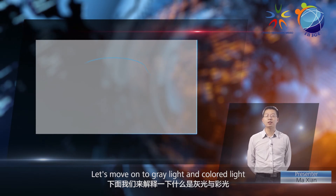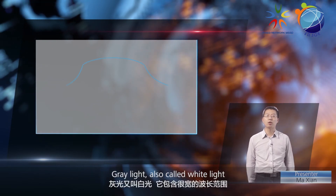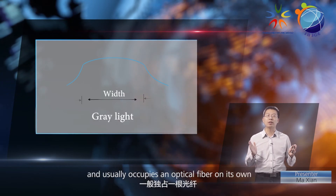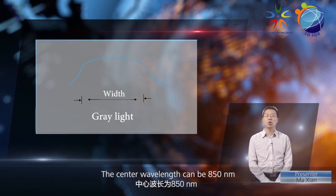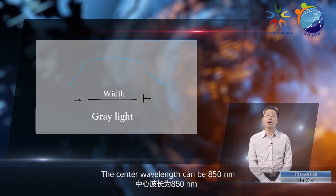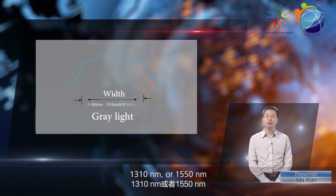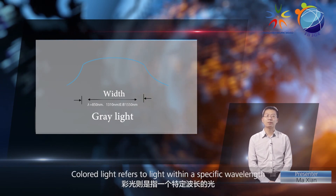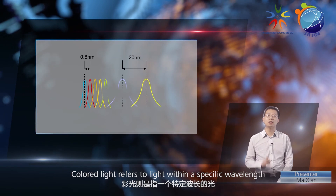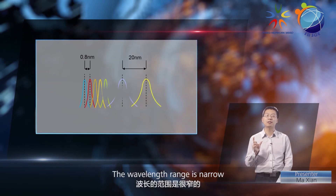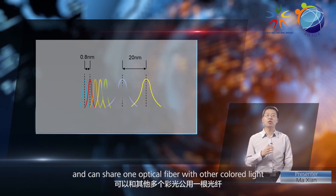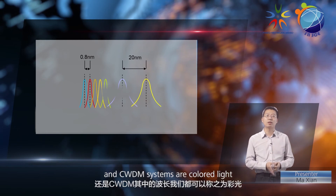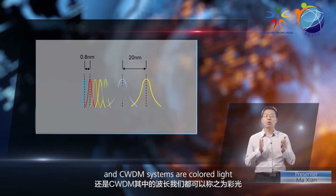Let's move on to gray light and colored light. Gray light, also called white light, has a broad wavelength range and usually occupies an optical fiber on its own. The center wavelength can be 850 nanometers, 1,310 nanometers, or 1,550 nanometers. Colored light refers to light within a specific wavelength. The wavelength range is narrow and can share one optical fiber with other colored light. The wavelengths used in both DWDM and CWDM systems are colored light.